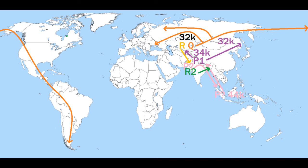By 32,000 years before the present, it had also traveled to the northwest, and that's the particular group of individuals we're interested in. In Central Asia, it becomes various other lineages — that's where R and Q diverge. So by 32,000 years before the present, R and Q have both split off from this northwestern branch of P.